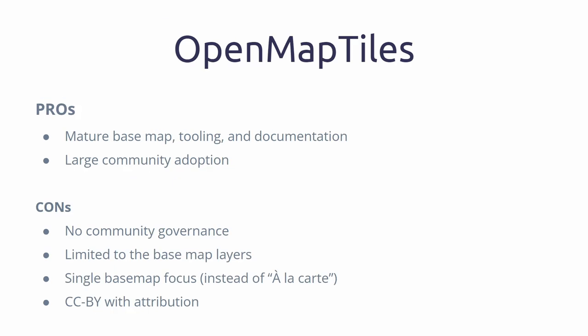OpenMapTiles. There are pros and cons. It's a very mature project — it's been around for six or seven years. It has huge community adoption and huge customer adoption. There are a lot of paying customers to MapTiler and a few other projects like StadiaMaps that use the same schema. There are some cons: there's no community governance. It's limited to just the base map, one style — one solution fits all, and it never does. So we need to go beyond that. It needs to become à la carte, a catalog where you pick and choose what you actually want. And it's CC with attribution, so that also causes some friction.